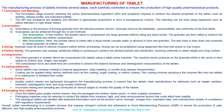Wet granulation. Here, the powder blend is mixed with a liquid binder, usually water or alcohol, to form wet granules. The granules are then dried and screened to obtain granules of uniform size.